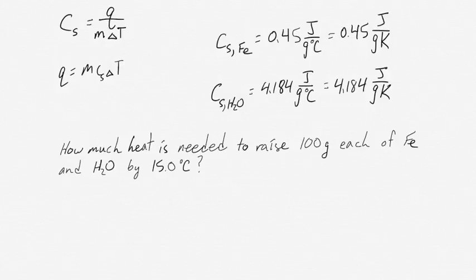Since we know how much heat is needed to raise 1 gram of a material by a certain number of degrees or Kelvin, we can use that value to scale up or scale down as needed. In this case, we're asked how much heat is needed to raise 100 grams of iron by 15 degrees Celsius, and 100 grams of water by 15 degrees Celsius.